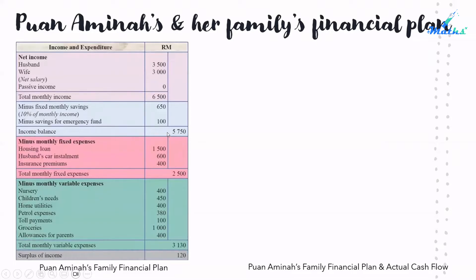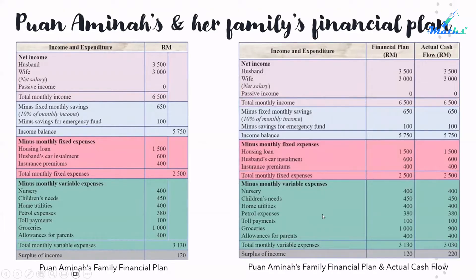The income balance becomes $5,750, and after deducting fixed expenses of $2,500 and variable expenses of $3,130, the surplus of income is $120. In the actual cash flow, the grocery expense is reduced by $100 based on Juan Amina's financial plan. After this reduction, the surplus of income increases to $220.